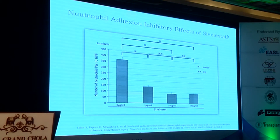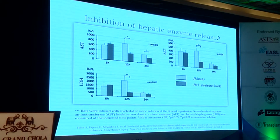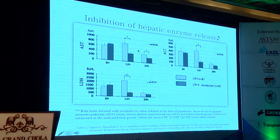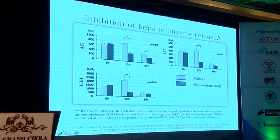An in vitro study with human umbilical endothelial cells showed that with increasing doses of sivelestat, there is inhibition of neutrophil adhesion. A rat study looking at reperfusion injury showed a diminution in AST, ALT, and LDH in animals treated with sivelestat. The drug is already used in humans with inflammatory lung disease and has been shown to be effective, suggesting it can be used clinically.